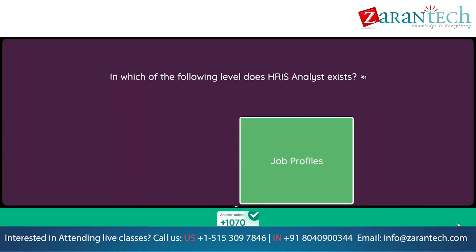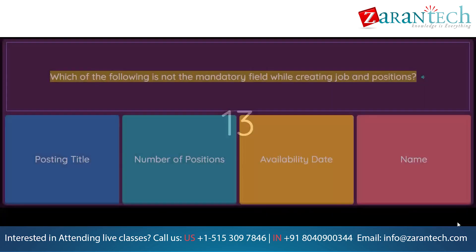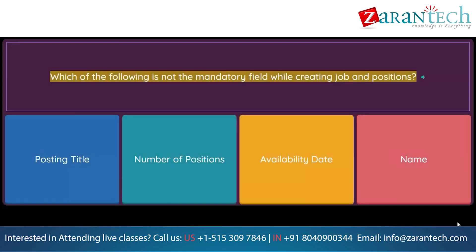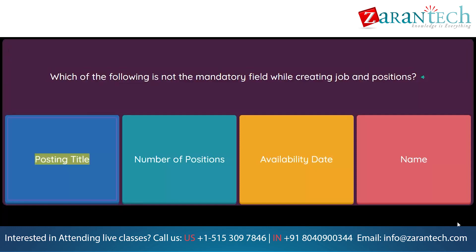Which of the following is not a mandatory field while creating jobs and positions? Option 1: Posting Title. Option 2: Number of Positions. Option 3: Availability Date. Option 4: Name.